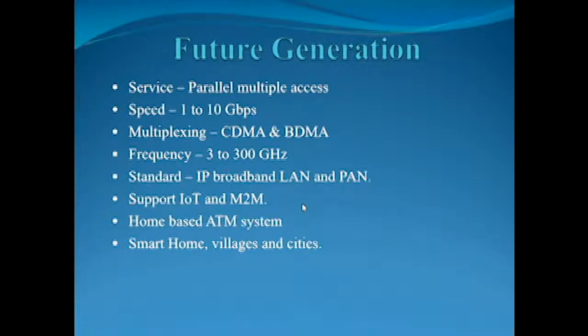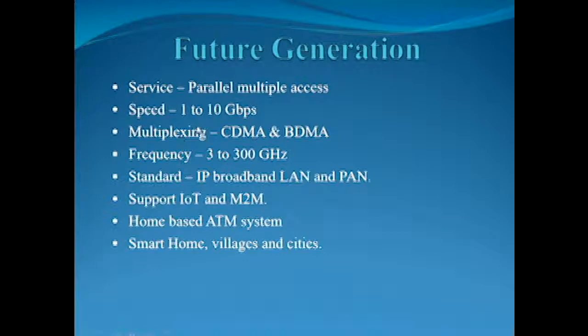Now at last we discuss the future generation. The features of future generation are: service — parallel multiple access. Speed: 1 to 10 gigabits per second. Multiplexing: CDMA and BDMA. Frequency: 3 to 300 gigahertz. Standard: IP broadband, LAN and PAN support, IoT and M2M, home-based ATM systems, smart homes, villages and cities.